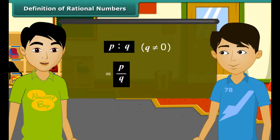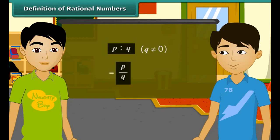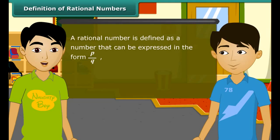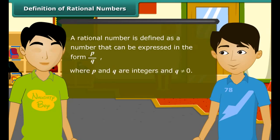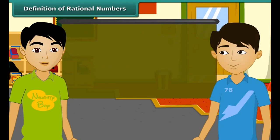This is the form in which rational numbers are expressed. A rational number is defined as a number that can be expressed in the form P by Q, where P and Q are integers and Q is not equal to 0.